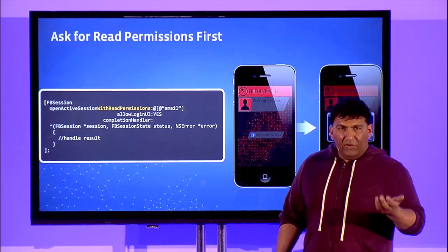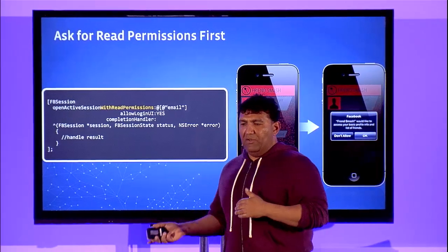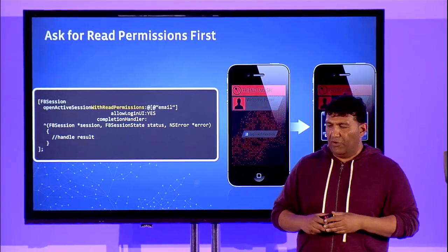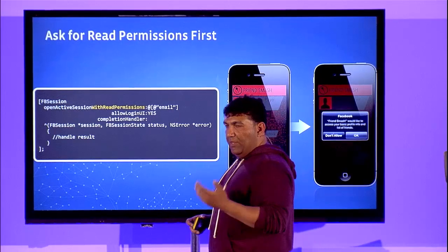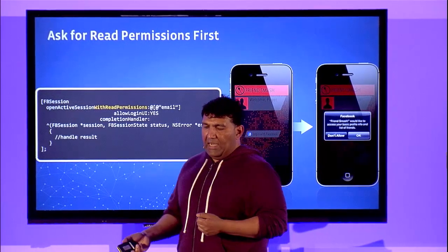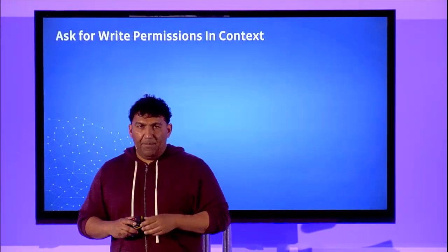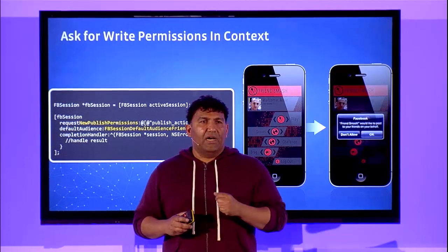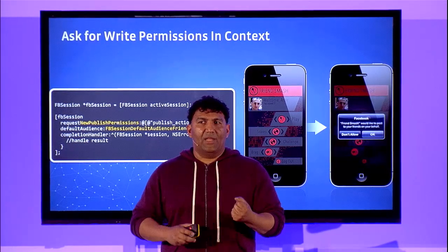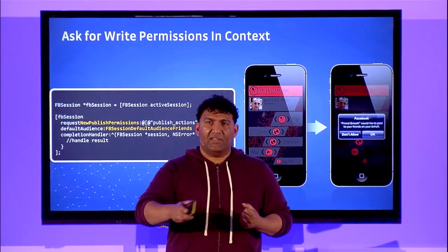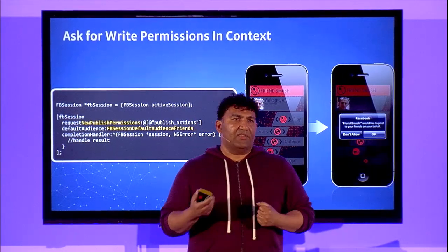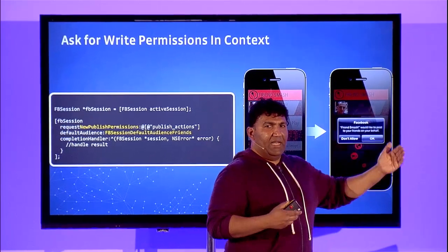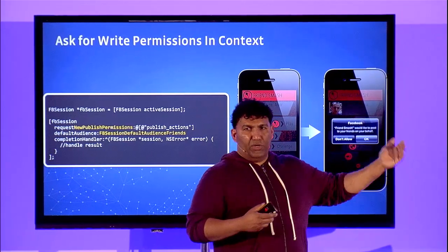You're required to ask for read permissions and write permissions separately, and asking for read permissions first is pretty important. Then make sure you ask for write permissions in context — when you want to write to someone's timeline, that's the time to ask. Don't ask up front at the beginning when they start using your app.